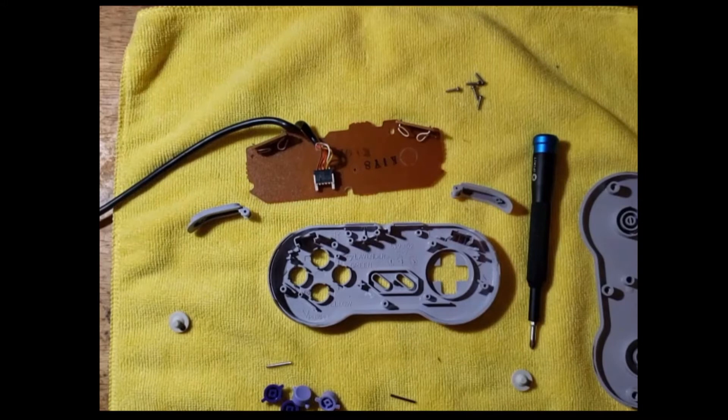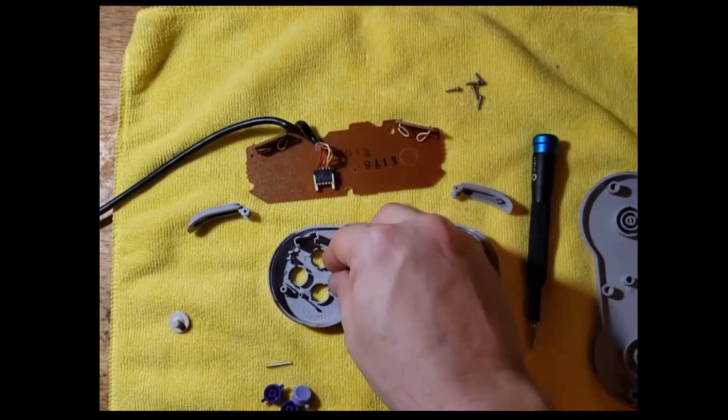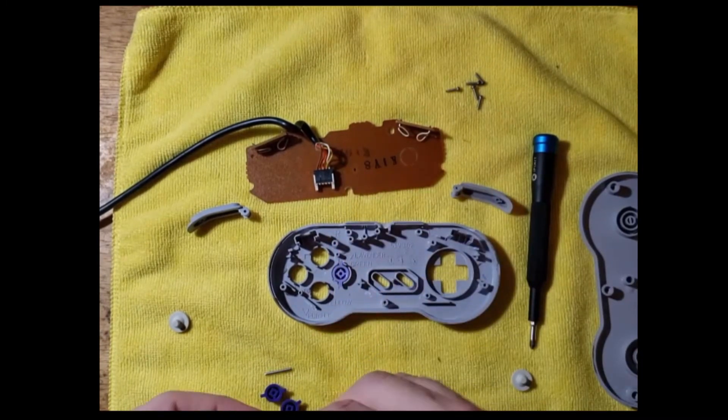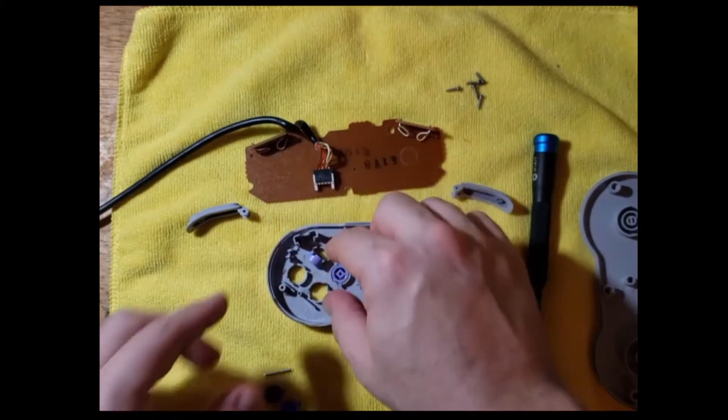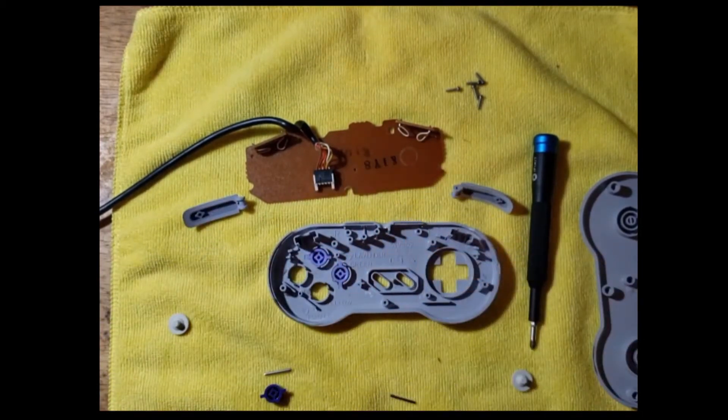But that's how you disassemble the controller. So to put it back together, I tend to start with my buttons. And they're pretty easy to put back in because the notches very clearly line up. And that's pretty self-explanatory.